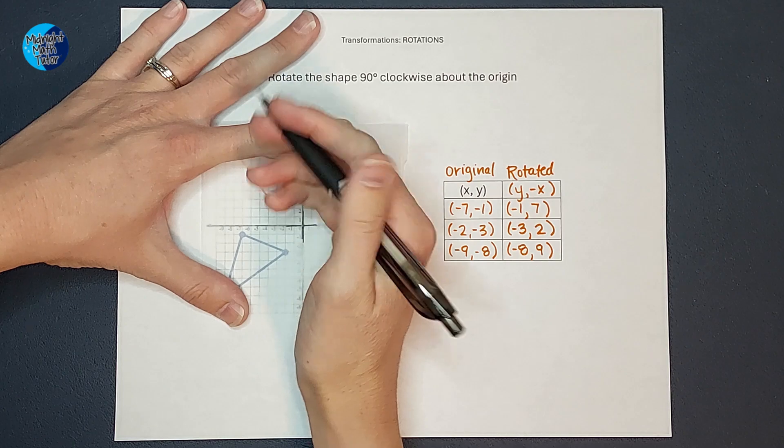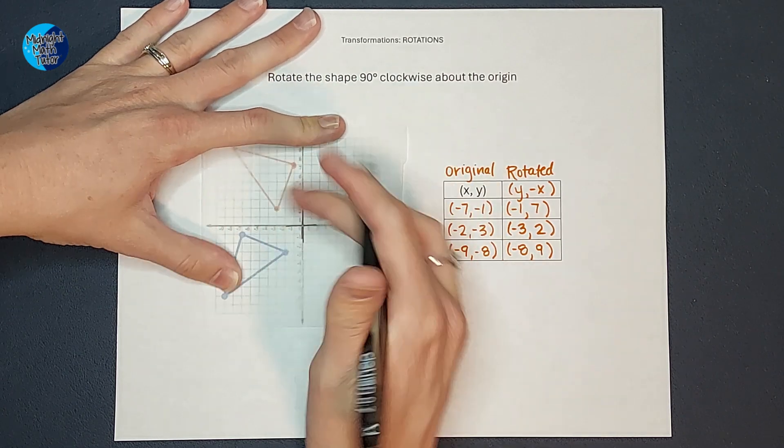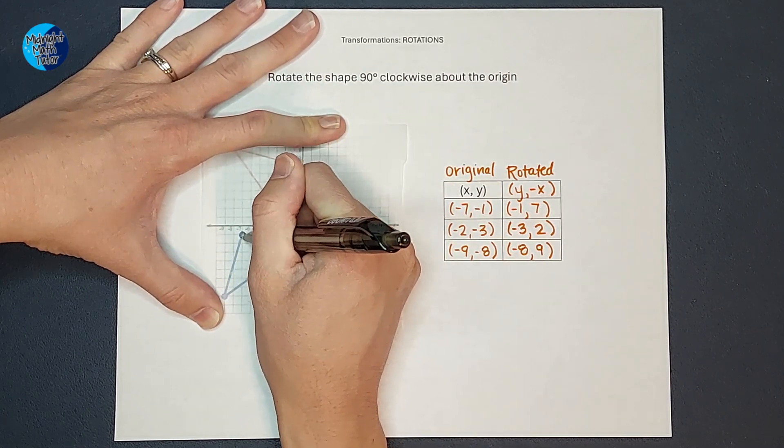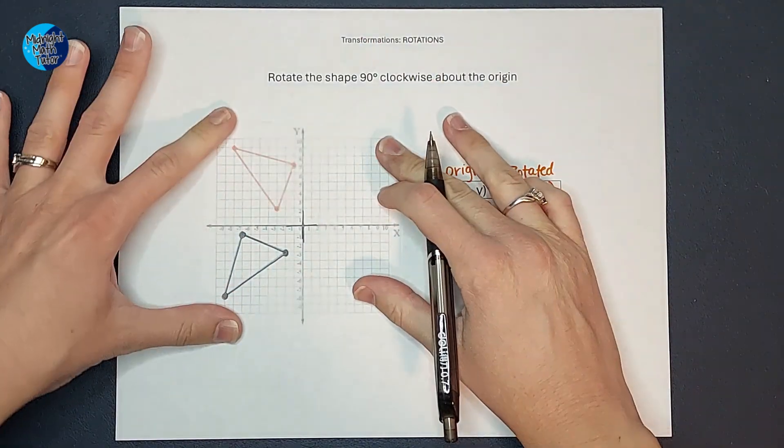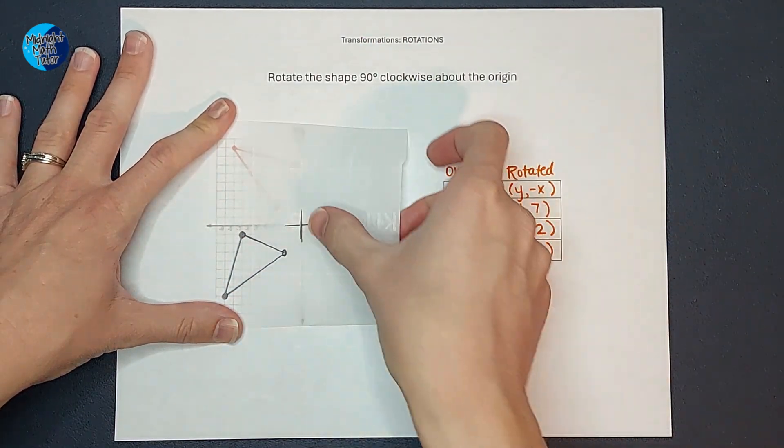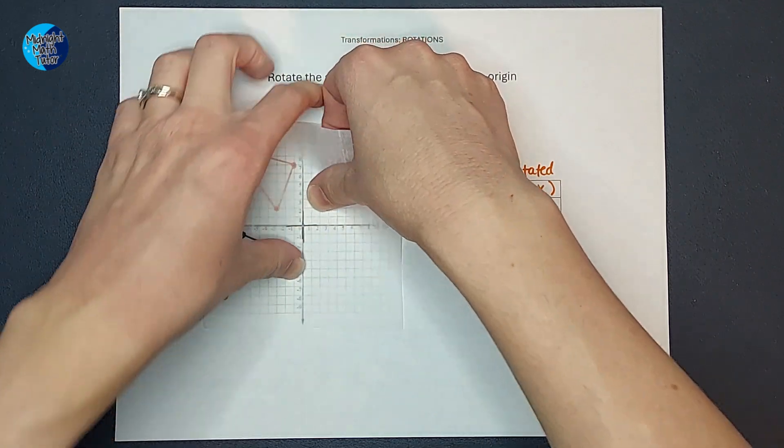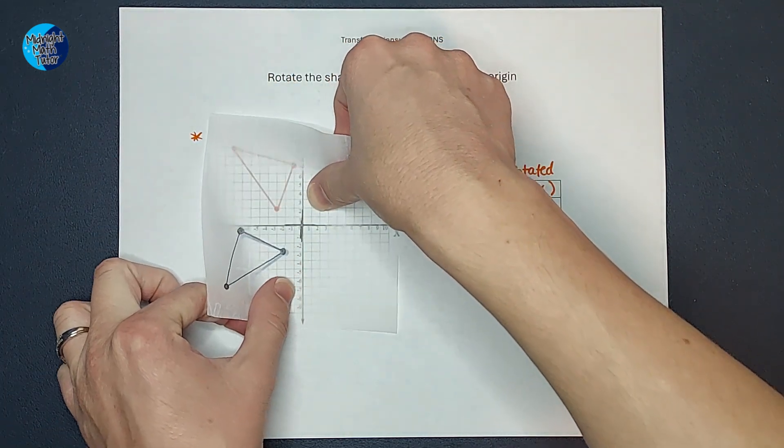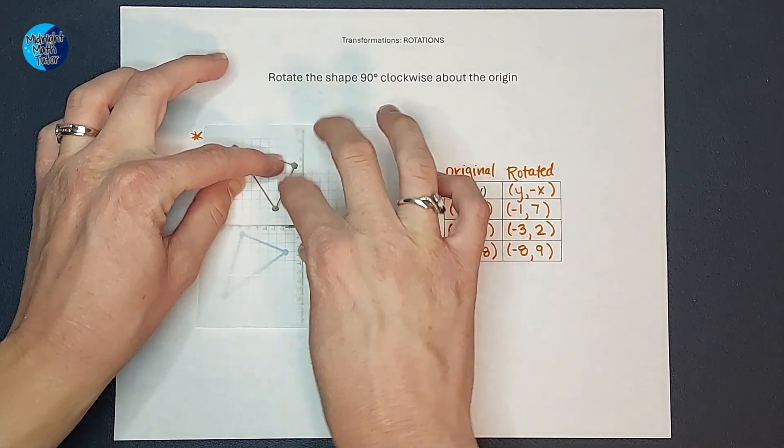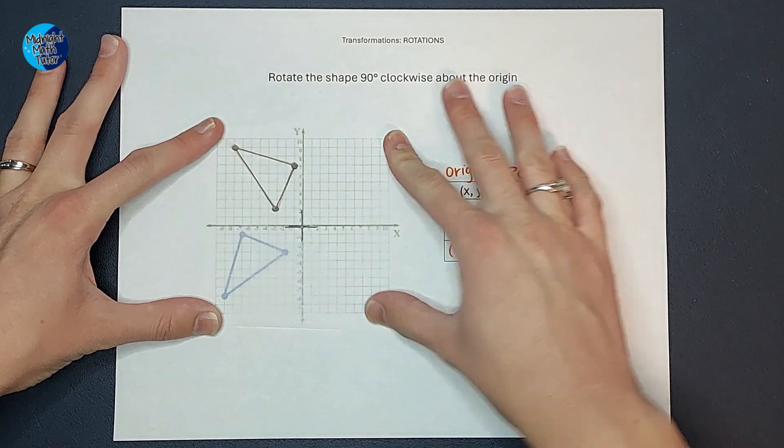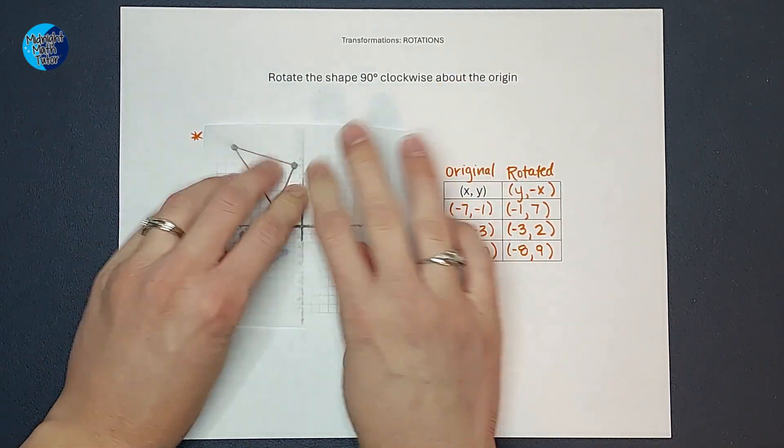Then I'm going to mark my original triangle here. Now I'm going to rotate this triangle 90 degrees so that they line up again clockwise, and look at how lovely it matches up. Awesome.